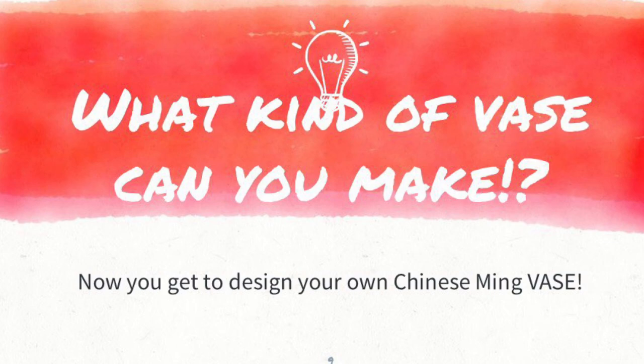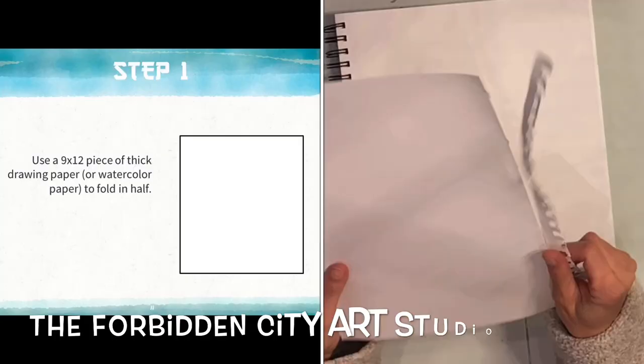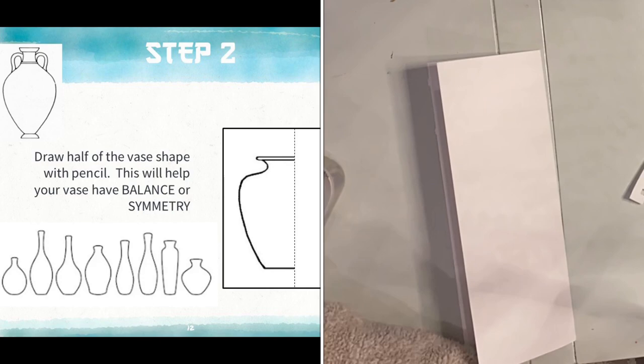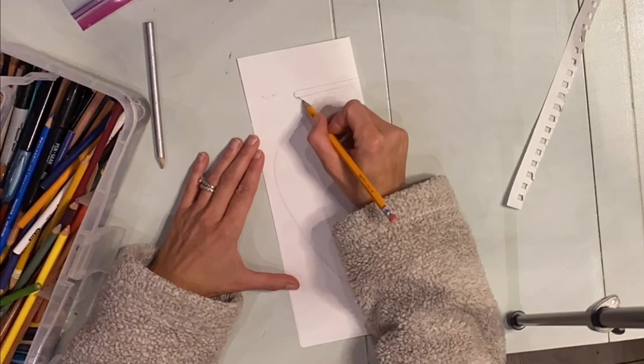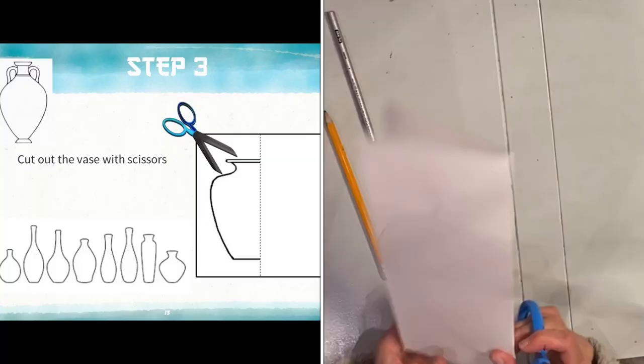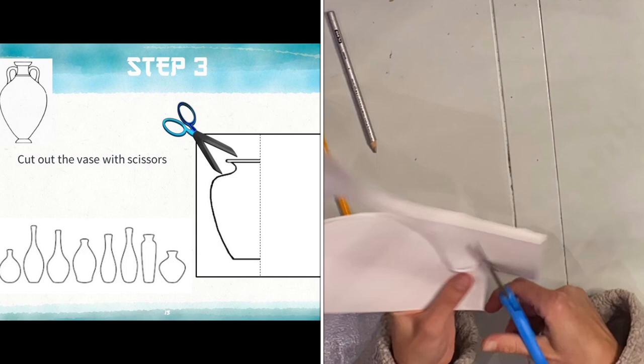Okay, now it's time for you to design your own Ming vase. We are going to start with a thick piece of 9x12 white drawing paper. We are going to fold it in half to create a line of symmetry. Using a pencil, only draw half of the shape of your vase. Then we are going to take our scissors and cut out that shape.